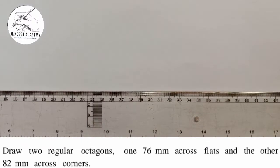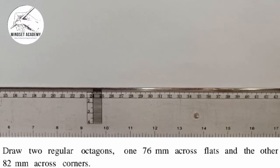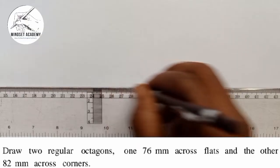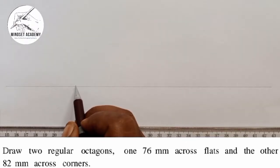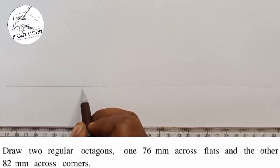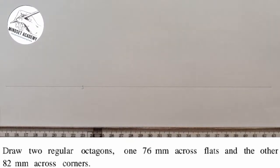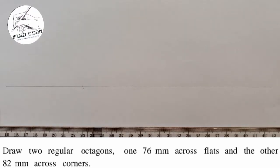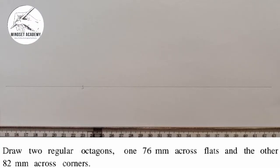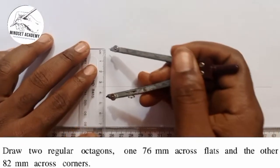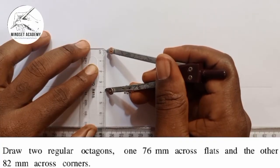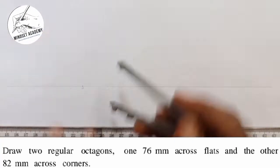Now, to construct this octagon: take your set square and draw a horizontal line. Mark a point — call it point O. We're told it is an octagon across flat, so take your compass and measure half of the given dimension, which is 76 millimeters. Half of 76 is 38, so measure from zero to 38 on your ruler and place the compass at point O.